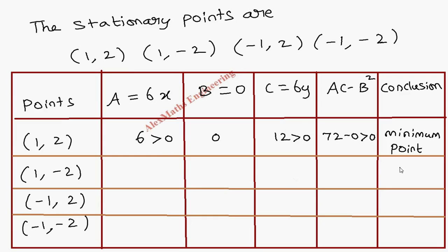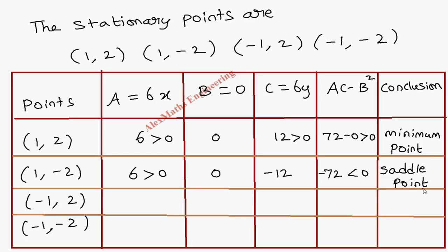For point (1, -2): A = 6, B = 0, C = -12. AC - B² = -72, which is less than 0, so this is a saddle point. For point (-1, 2): A = -6, B = 0, C = 12. AC - B² = -72, less than 0, so again a saddle point.